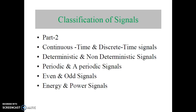We know that signals can be classified into different types: continuous time and discrete time signals, deterministic and non-deterministic signals, periodic and aperiodic signals, even and odd signals, and energy and power signals. In the last screencast, we have seen continuous time and discrete time, deterministic and non-deterministic, and periodic and aperiodic signals.